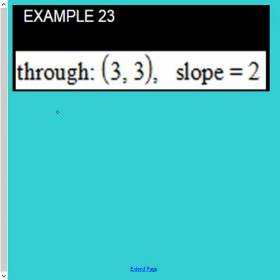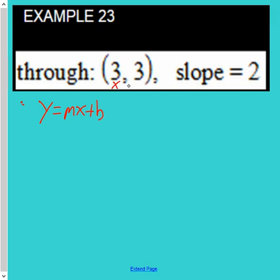We need to put this in slope-intercept form: y equals mx plus b. This is x, y, m. Substitute 3 for y, 2 for m, 3 for x.